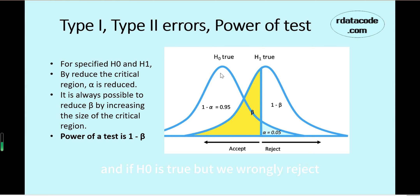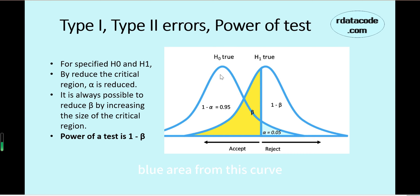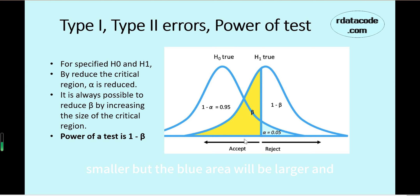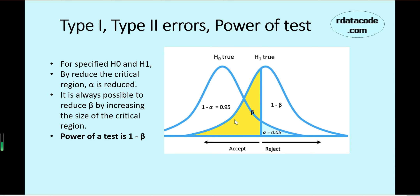The power (1 minus Type 2 error) is the probability under the H1 curve on the right side of the decision line. If H0 is true but we wrongly reject it because we get more than 8 positives in a sample of 20, we commit a Type 1 error. Alpha is the blue area — the region under the H0 curve to the right of the decision line. If we move this vertical line to the left, from 8 to 7, the yellow area becomes smaller and the blue area becomes larger, so the power of the test increases.